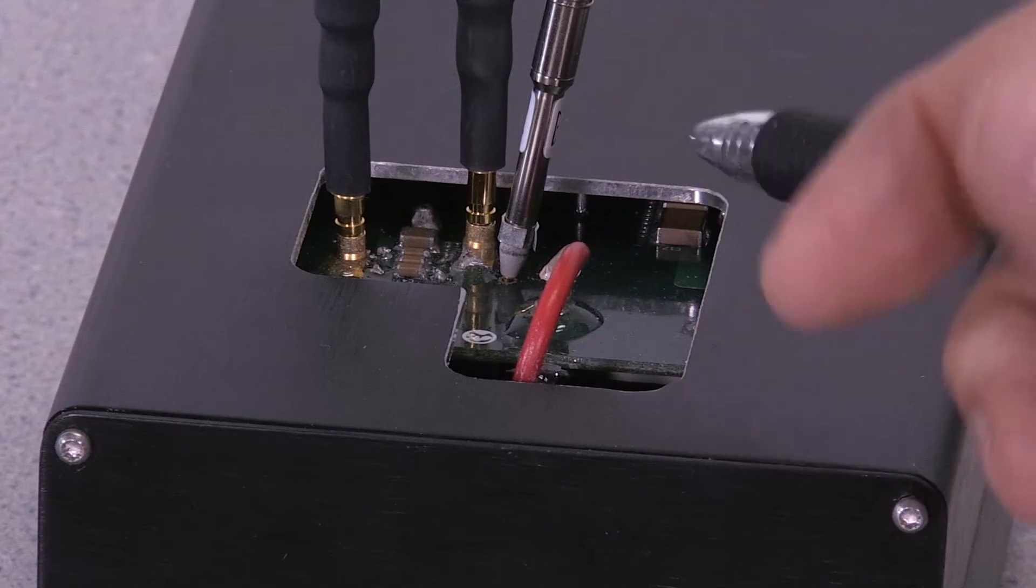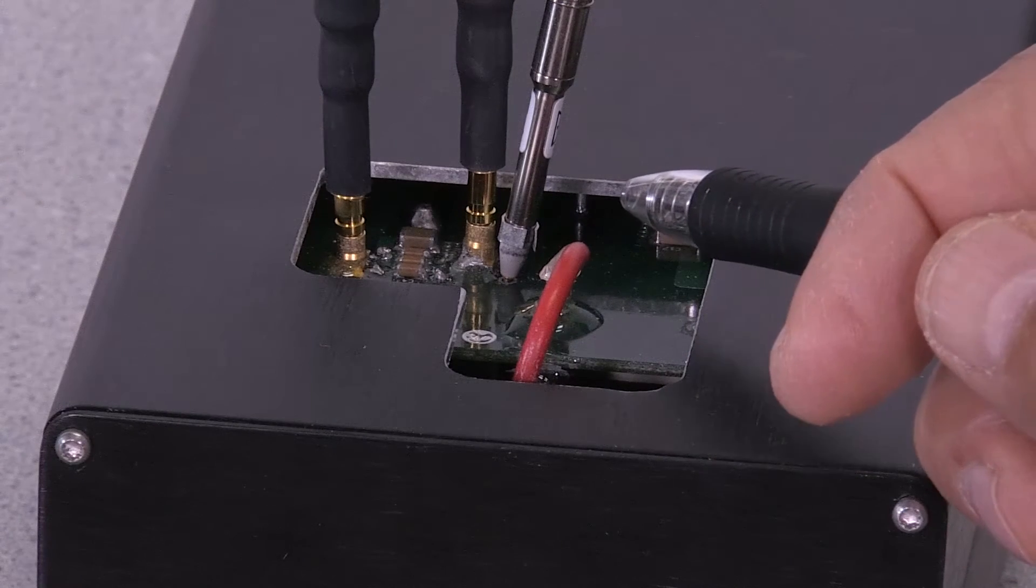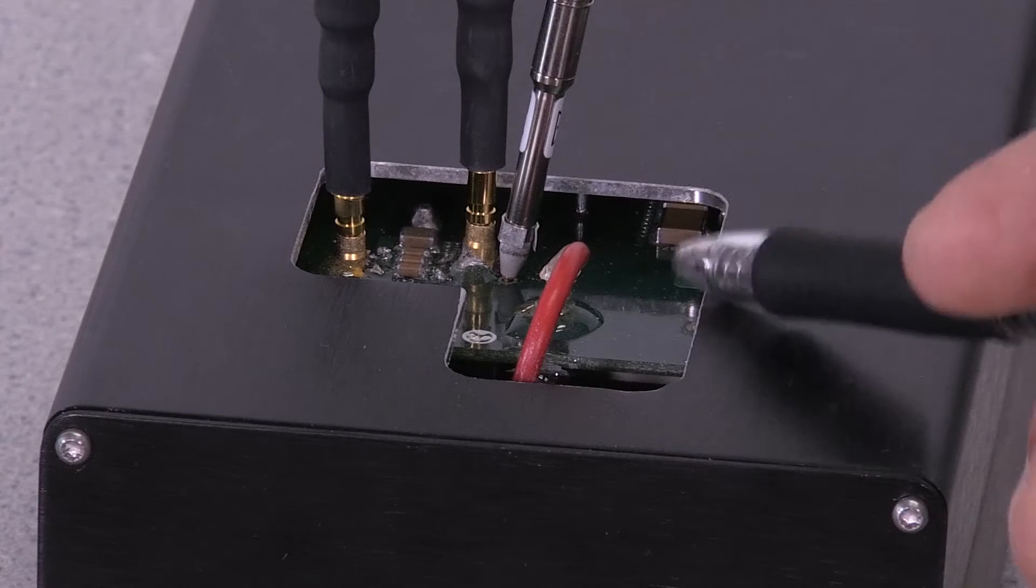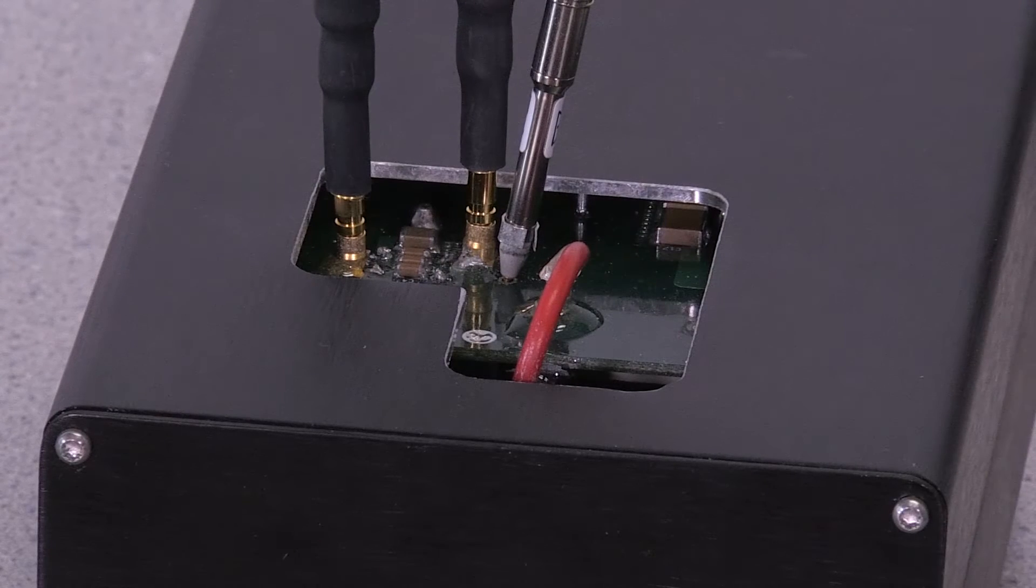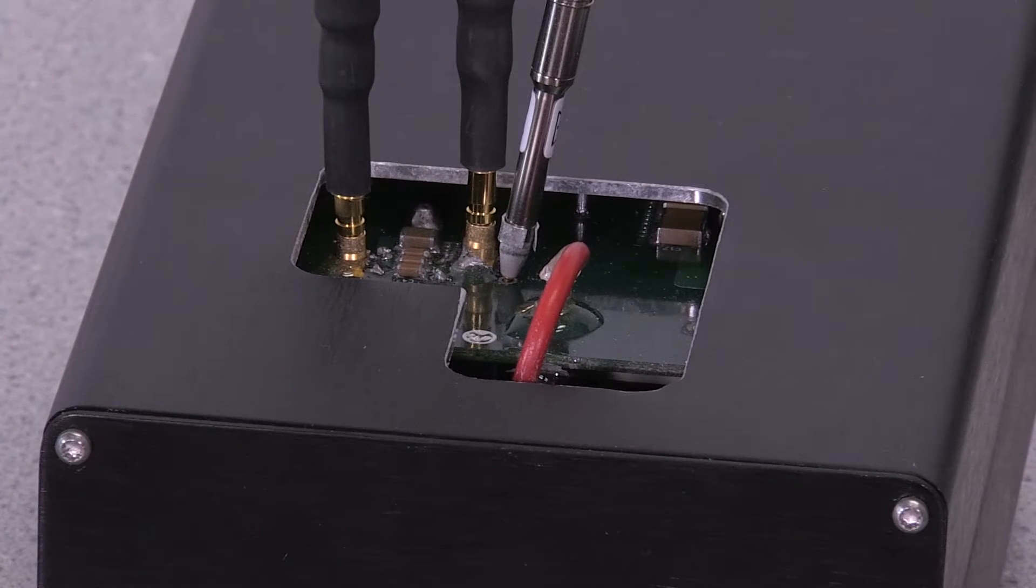We have a third probe, which is the passive probe that's connected to the drain, looking at the switch node. We've also added a current loop here if we want to measure the current into the load.